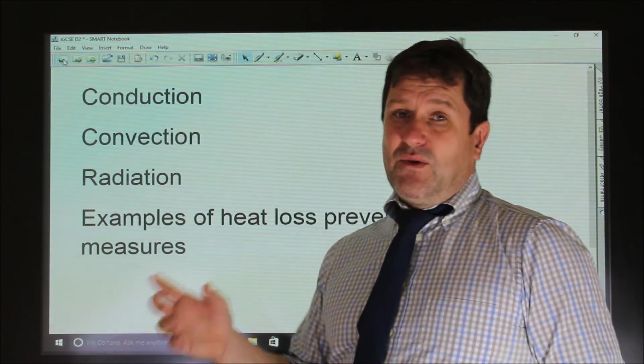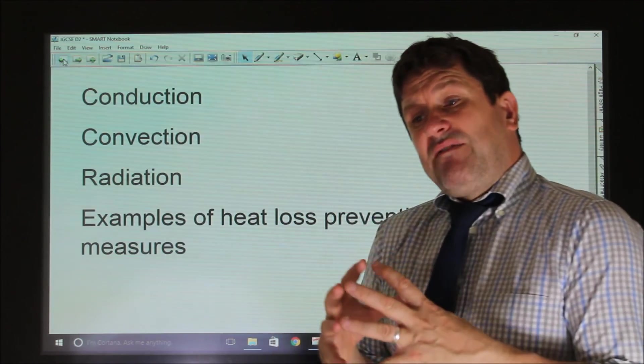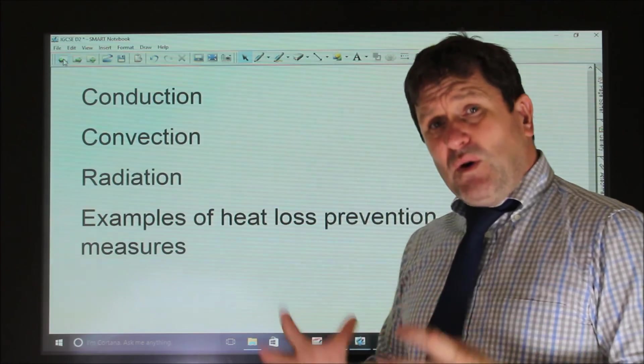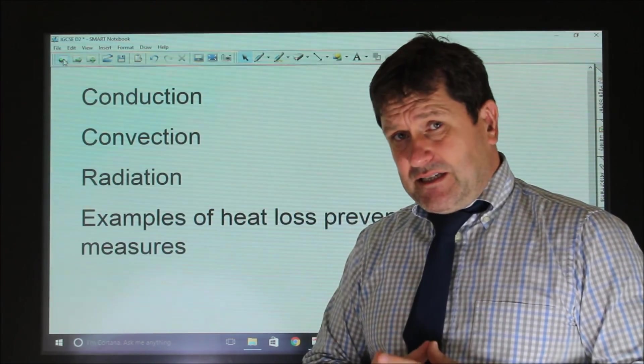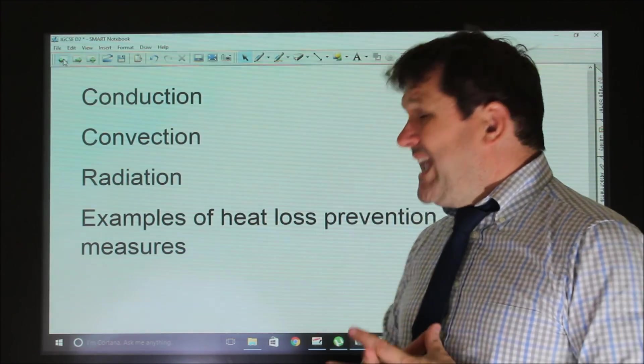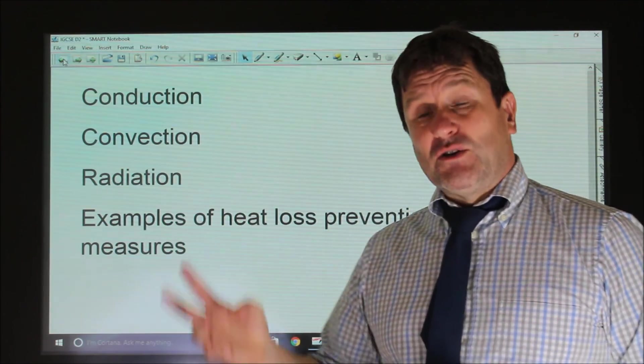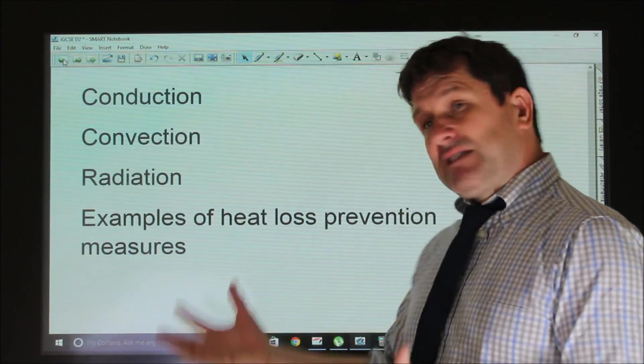A low-level question might talk about black objects absorbing infrared radiation and silver objects reflecting it. But a higher-level question will talk about a hot object which is radiating infrared radiation itself. It's important to remember that a black object which is hot will radiate its heat quickly, whereas a white or silver object will radiate its heat very slowly.